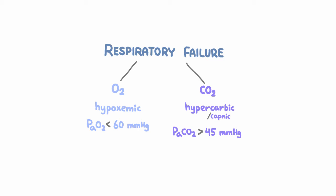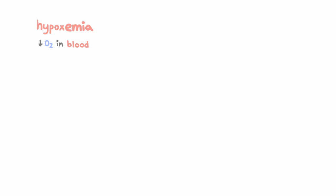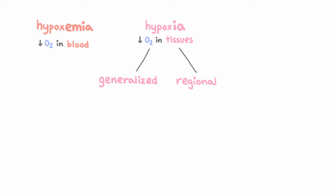There is some terminology here that can get confusing. Hypoxemia refers specifically to inadequate oxygenation of the blood, whereas hypoxia refers more generally to inadequacy of tissue oxygenation. Hypoxia can be generalized or regional. Generalized hypoxia is usually caused by significant hypoxemia, because if the blood is short on oxygen, all the tissues will be too. But localized tissue hypoxia can occur without hypoxemia, with normal blood oxygen content — which is why it's important to distinguish between hypoxia and hypoxemia.